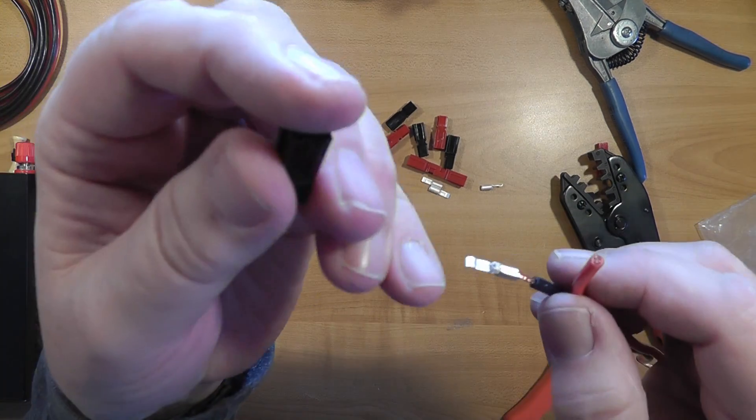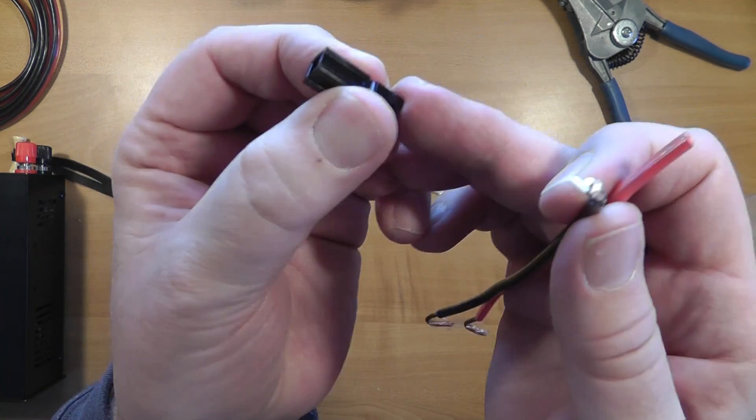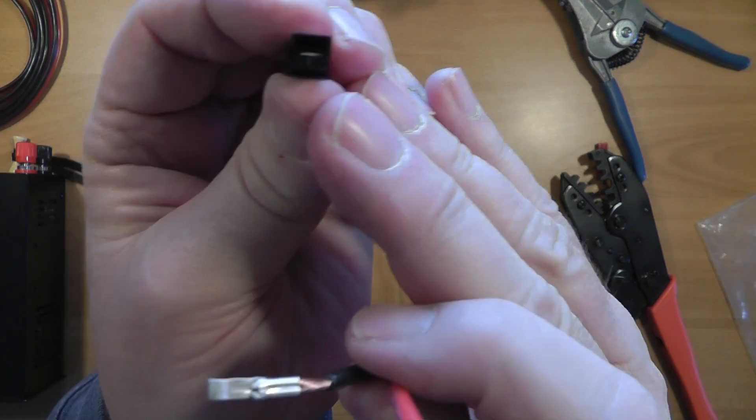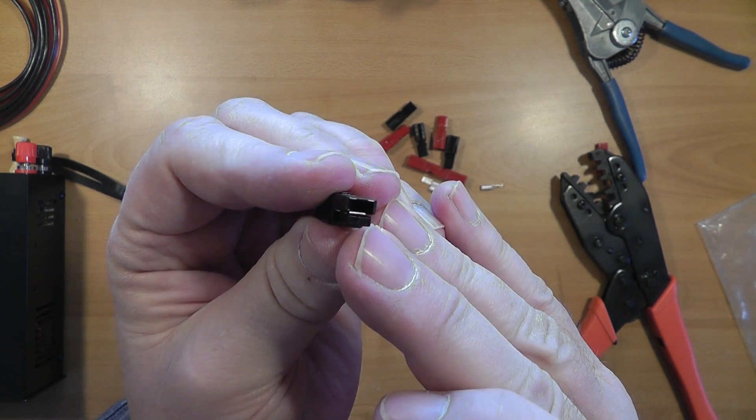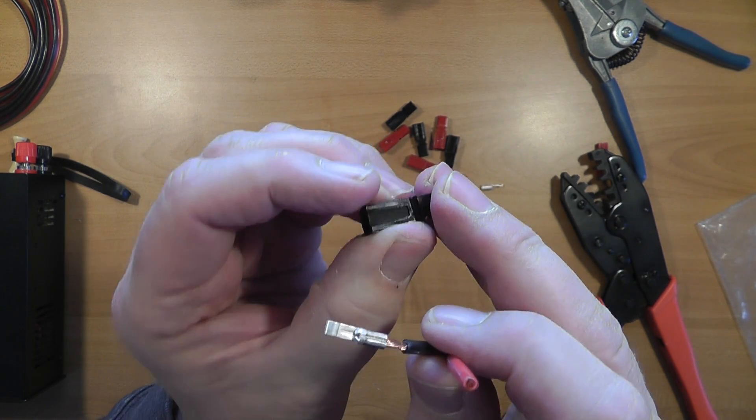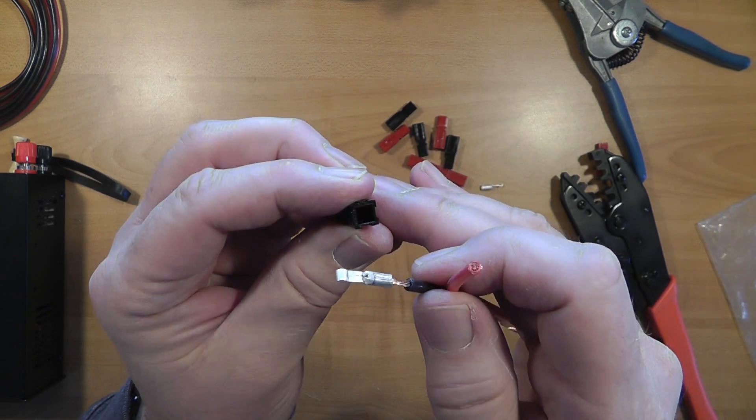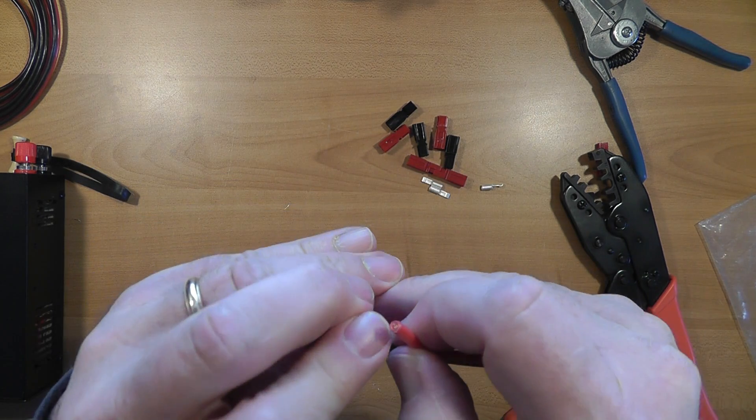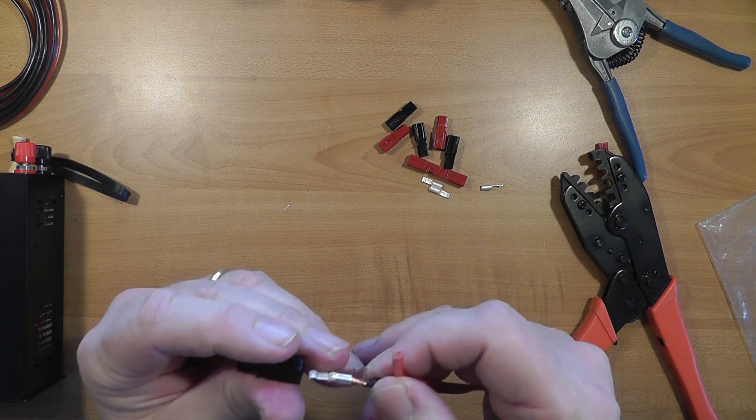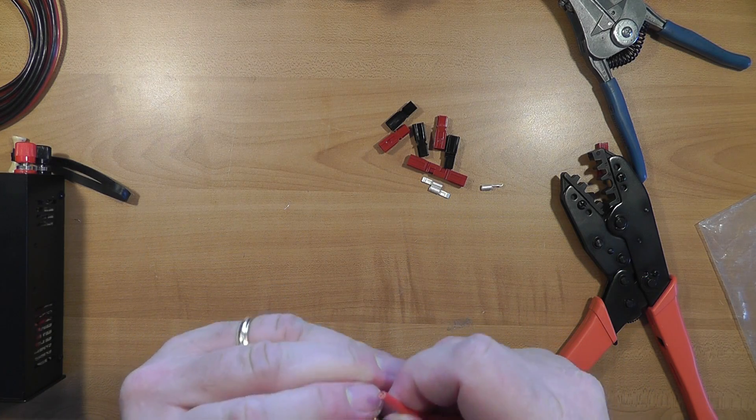Now, what we do is we take the black that we've got right here, and this is the end. Let me get the light just right there. This is the end with the little piece there. So, we're going to turn this around and come in with this, push it in. Make sure I got it right. Yep. Push it in until it clicks.